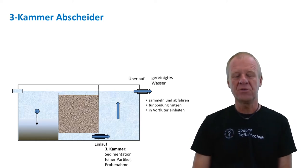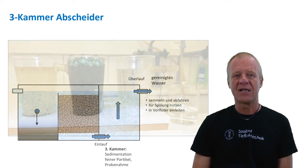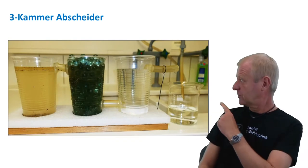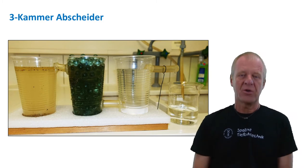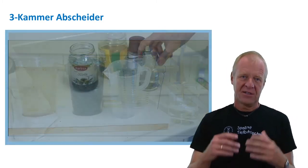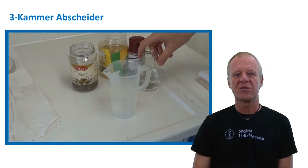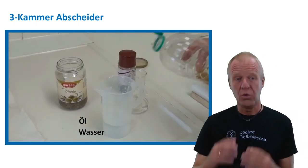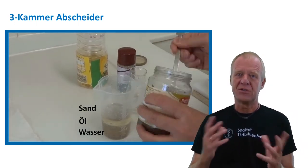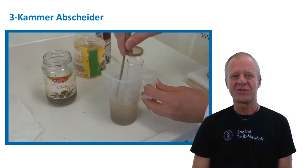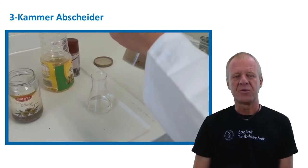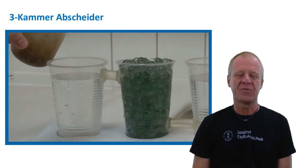The principle of the three-chamber separator works pretty well and we can demonstrate that in our experiment here. We build the three-chamber separator with three cups and a pair of straws. Now we need a dirty mixture for our experiment. We have put together water, cooking oil, a bit of sand and pepper as suspended particles and we have mixed them together as good as possible. Now let's see if we can get this mixture processed.